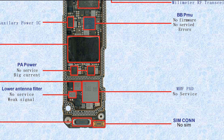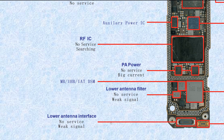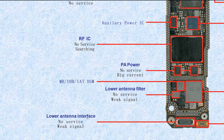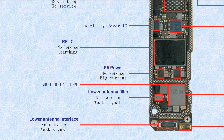This one is the MHF PAD — Medium High Band Frequency power amplifier. If broken, it causes no service. This one is the SIM connector — if broken, it causes SIM reading problems. This one is the lower antenna interface — low antenna connector. If broken, it causes no service or weak signal.